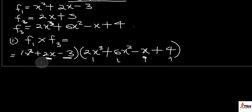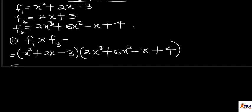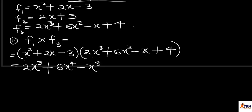So we start with x squared. x squared times 2x cubed gives us 2x to the power 5. From our knowledge of indices, we go to the next one. x squared times 6x squared gives us 6x to the power 4. Then x squared times minus x gives us minus x cubed. And x squared times 4 gives us plus 4x squared. Now we are done with this first term.